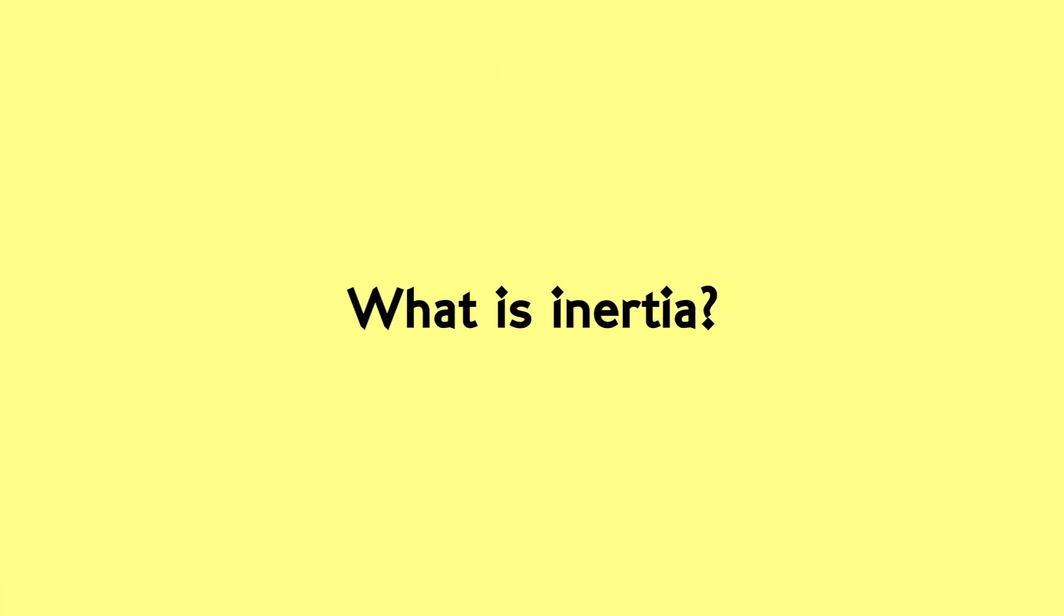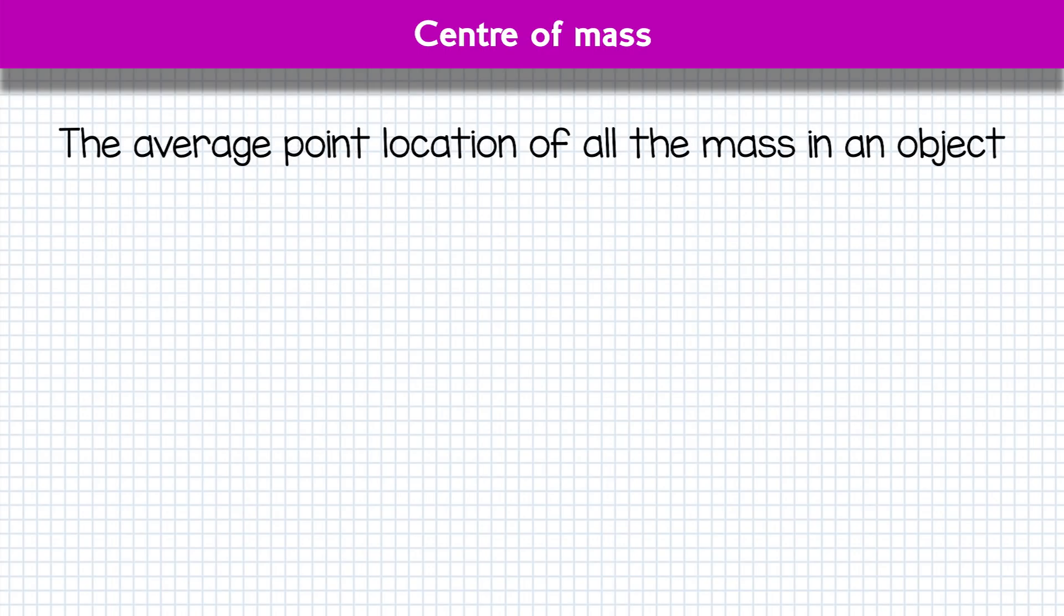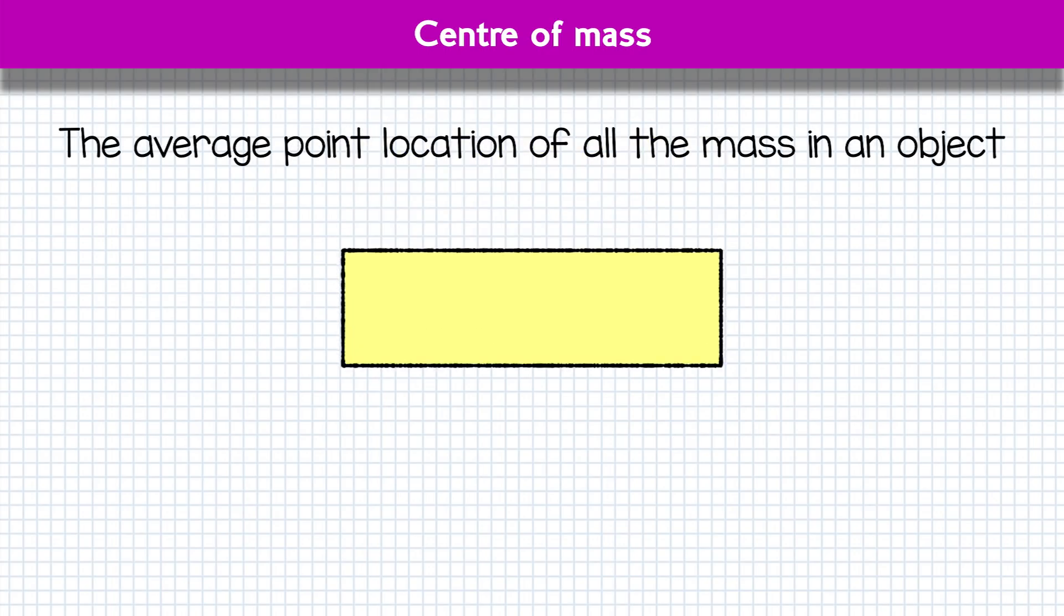Now let's consider inertia. But quickly first let's define the centre of mass, which you'll often hear as the centre of weight, though that's less accurate. It's very simple. The centre of mass is the average point of all the mass in an object. A pretty regular homogenous cuboid of plastic would have a centre of mass bang in the middle.